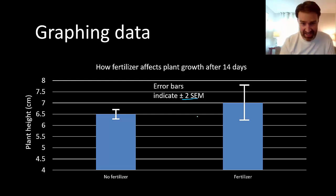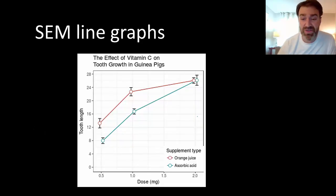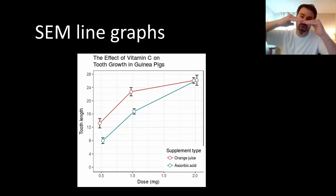By the way, you can also do this for line graphs. So if you happen to have data that was continuous on both axes, then you would make a line graph perhaps instead. You'd still be plotting your data points for your sample means, but you can still draw error bars on data points to show the upper and lower bound of your true population mean.